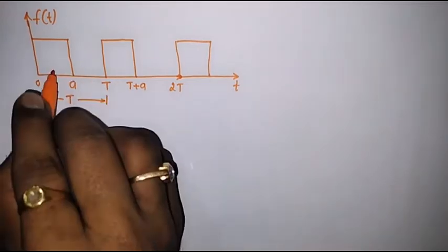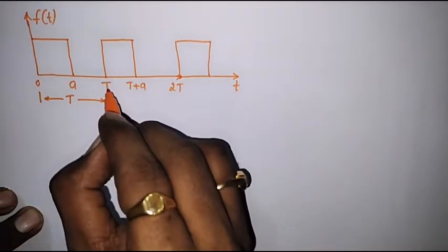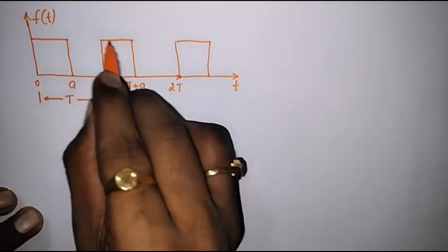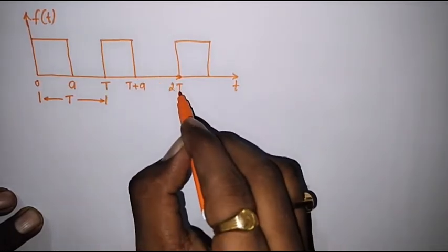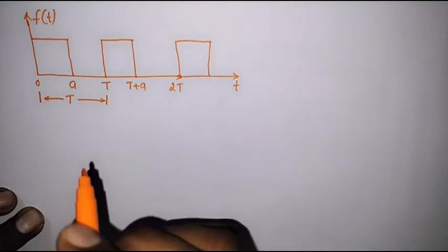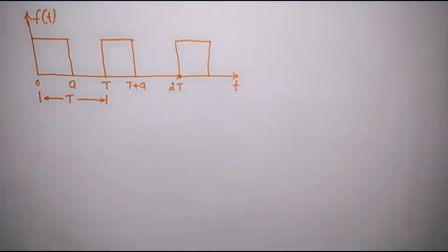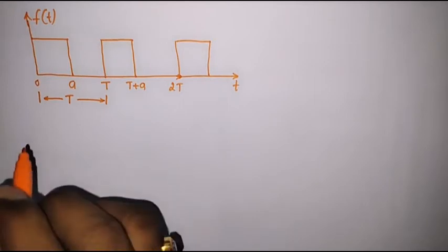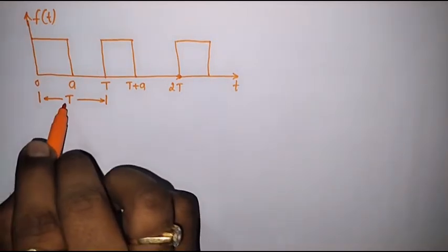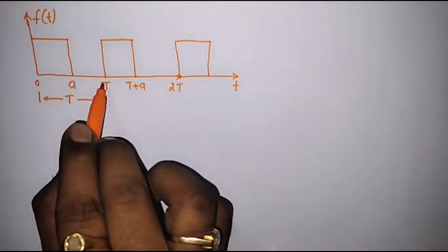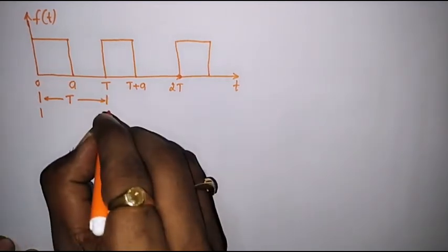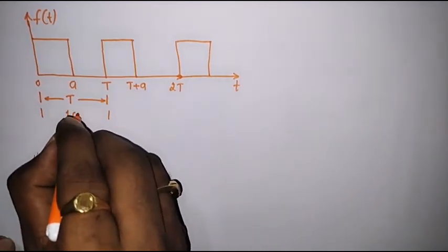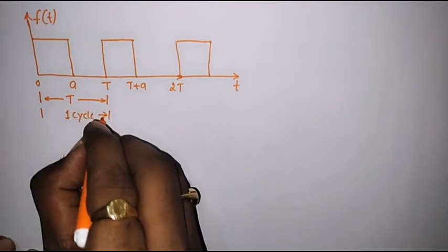After T, the same signal will repeat. That is, from T to T plus a we have a pulse, and from T plus a to 2T it is 0. Again at 2T the same thing will repeat. This kind of signal is known as a periodic signal, and T is the period of one cycle.